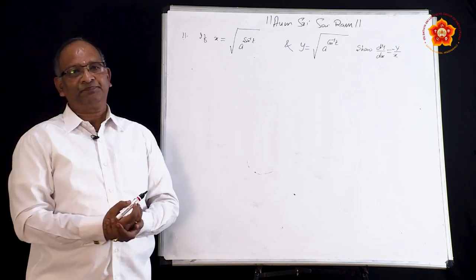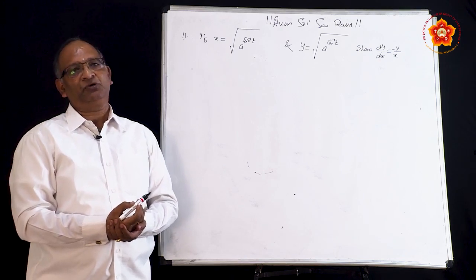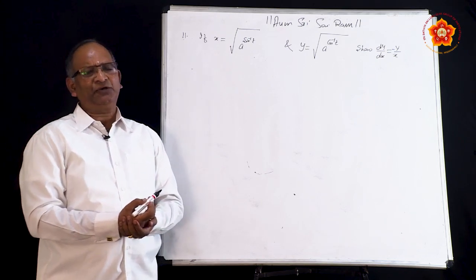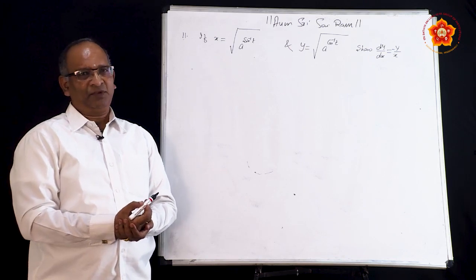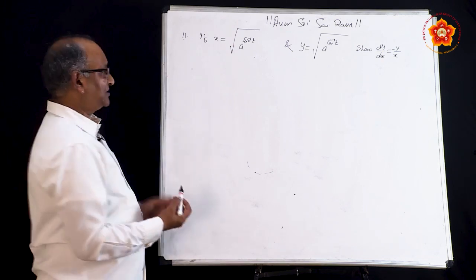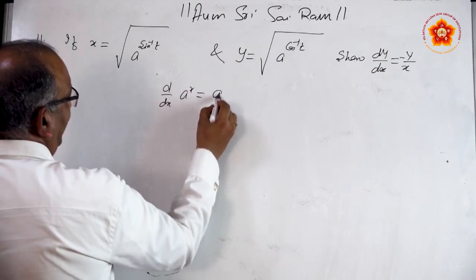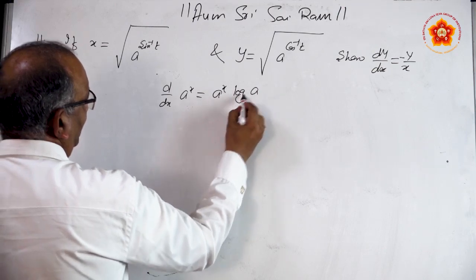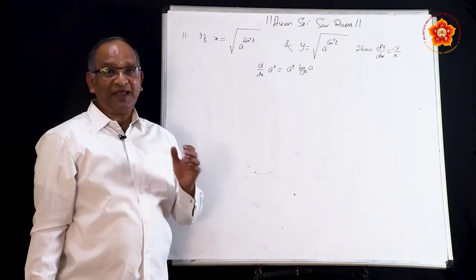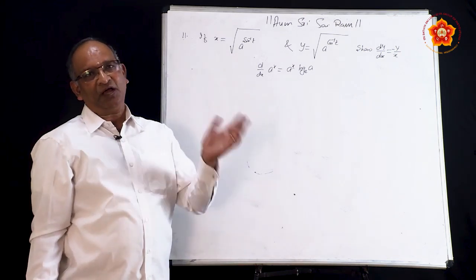Let us take up this problem. If you are able to understand this problem, every other problem you will be able to solve. Why is it complicated? Because we generally do not come across functions of the form a to the power x. Even though we know the derivative of a^x — which is a^x · log(a) base e — what we have here is an inverse trigonometric function inside a square root. So we have a function of a function of a function.